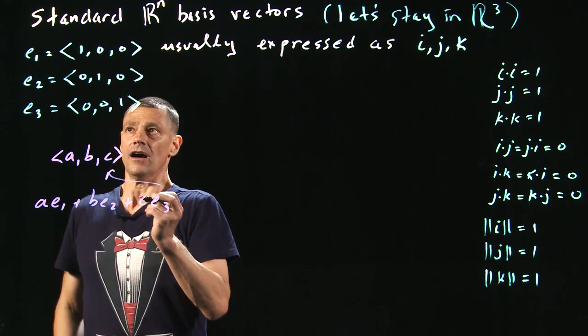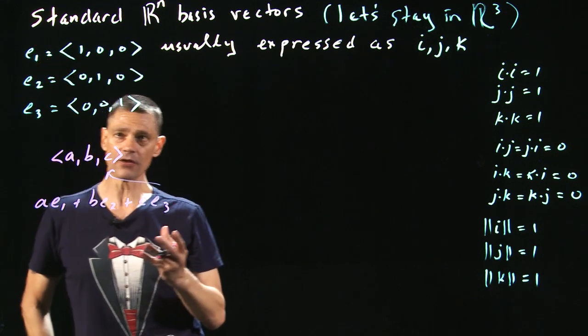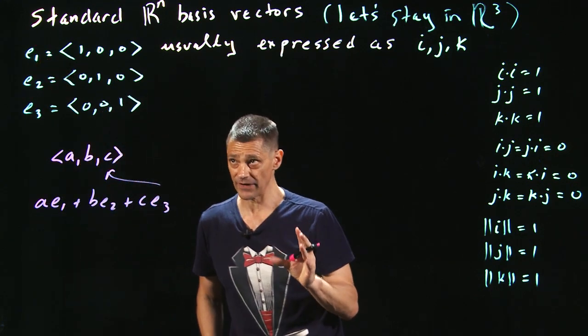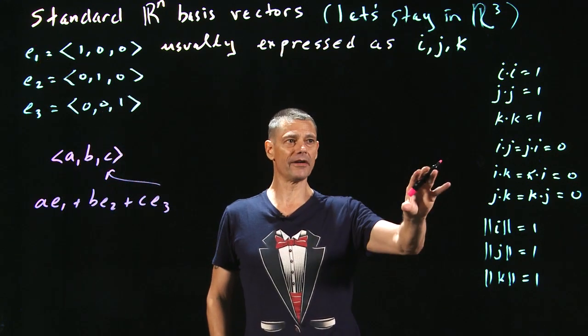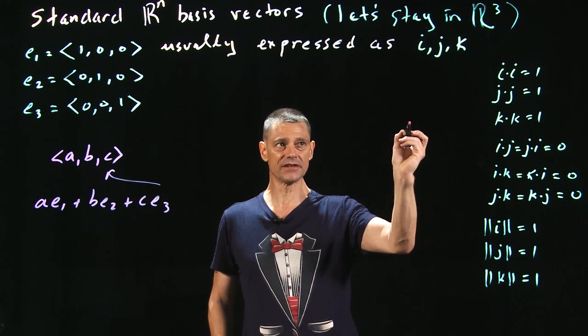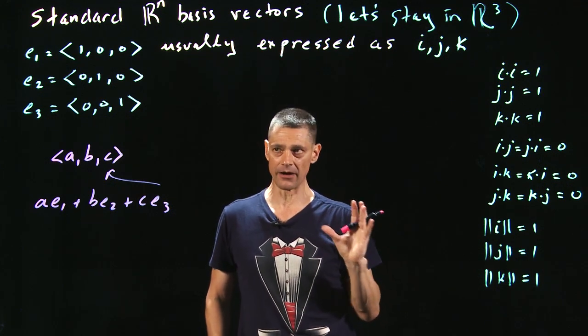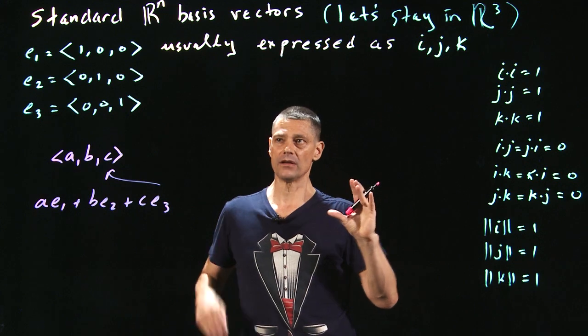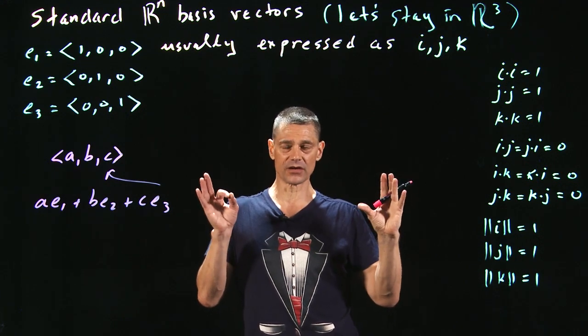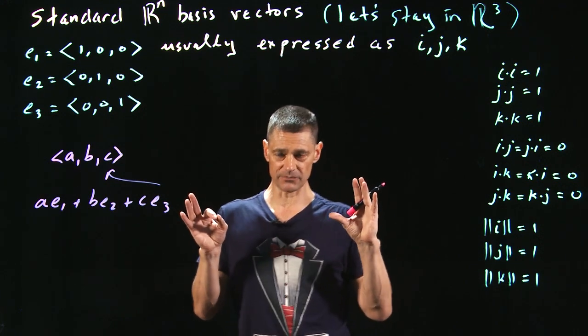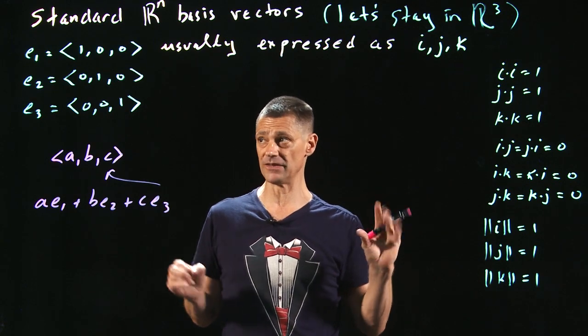Incidentally, notationally, oftentimes there's little arrows over them just to make sure that people know their vectors. This board and these pens aren't really conducive to making lots of little arrows. So as long as the context will make it clear what I'm talking about, I probably will leave them off.